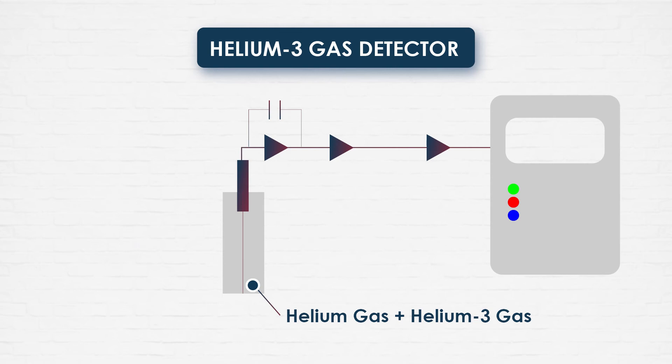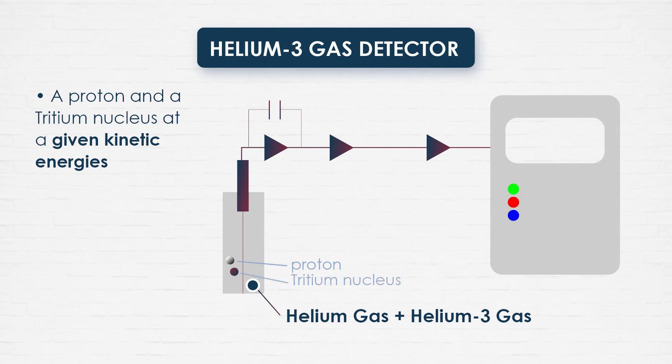By means of electrodes, a proper electric field is set within the chamber. So, when a thermal neutron enters the chamber, it is likely to react with the helium-3 nucleus of the gas. The reaction produces a proton and a tritium nucleus at a given kinetic energy.